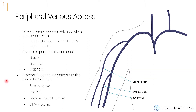When we're talking about peripheral venous access, we're usually going to be going through typically the upper extremity. They can be placed in the lower extremity, but common veins include the cephalic vein, the brachial vein, or the basilic vein in the upper extremity. Peripheral venous access via a peripheral IV or midline is kind of the standard access for patients in the emergency room, inpatient setting, the operating room or procedure room.